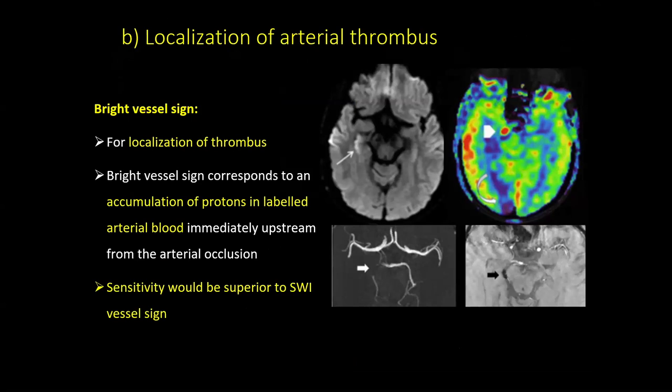The second application is localization of arterial thrombus. This is based on a phenomenon called the bright vessel sign, which occurs due to accumulation of protons in labeled arterial blood immediately upstream from the arterial occlusion. This is very important for determining the site of intra-arterial thrombus in stroke cases, and studies suggest this sign may be even more sensitive than the area of blooming seen on susceptibility-weighted images.